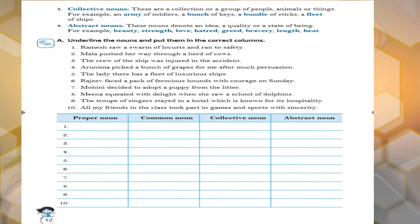Children, collective noun, we have done already. We learned a lot in previous classes. Like a group of people, group of animals, or group of things. Like an army of soldiers, bunch of keys, bundle of sticks, etc.